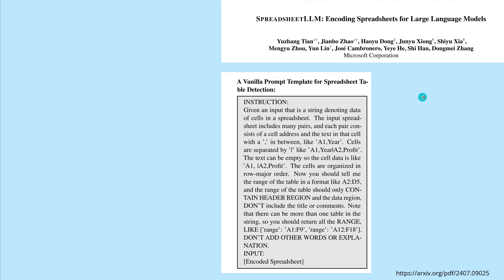I will give you here the instruction — the vanilla prompt template if you normally use a spreadsheet table detection. Give them an input that is a string denoting data of cells in a spreadsheet. The input spreadsheet includes many pairs; each pair consists of a cell address and the text in that cell, with a separator like a comma.